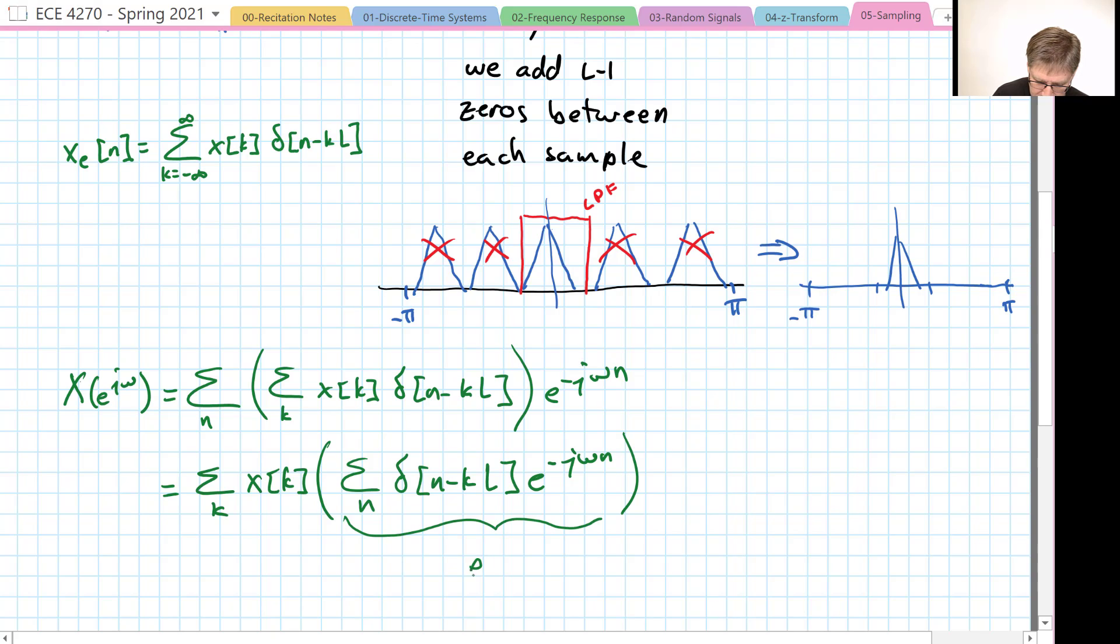So this is now going to be e to the negative j omega lk, and then the outer sum is simply the Fourier transform except with omega l. So that's going to give us x e to the j omega l.